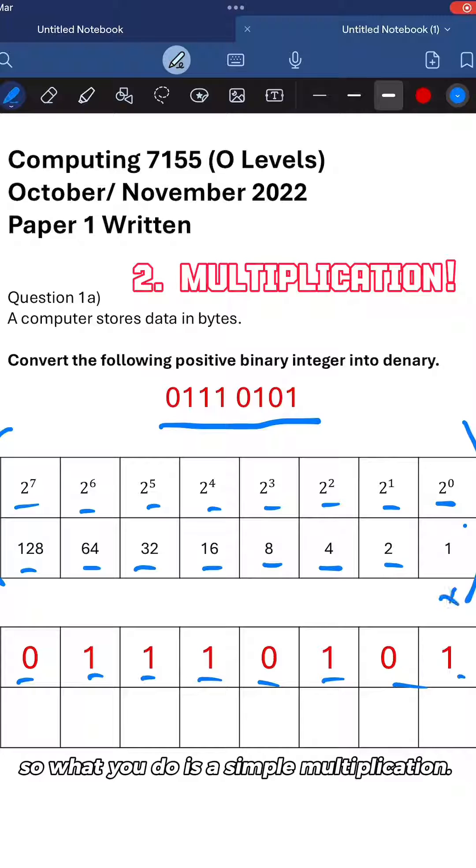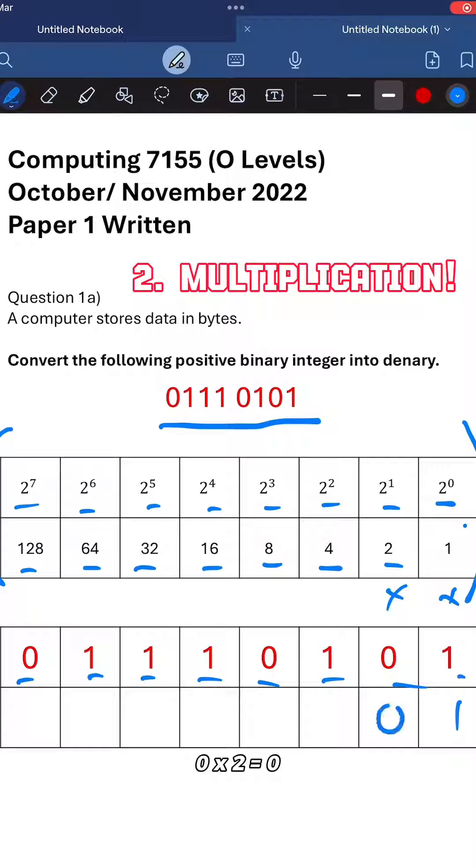So what you do is a simple multiplication. So 1 times 1, the value is 1. 0 times 2, the value is 0. 4 times 1, the value is 4. 8 times 0 is 0. 16 times 1, 32 times 1, and 64 times 1.